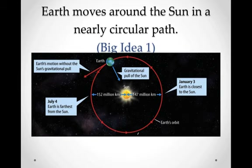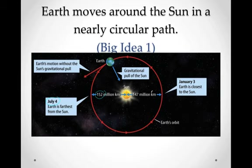Big idea number one is how does the Earth move around the sun. Earth moves around the sun in a nearly circular path. Around July 4th, the Earth hits its farthest point from the sun at 152 million kilometers. On January 3rd, it's at its closest point at 147 million kilometers. These are really big numbers — we're a pretty good distance from the sun.